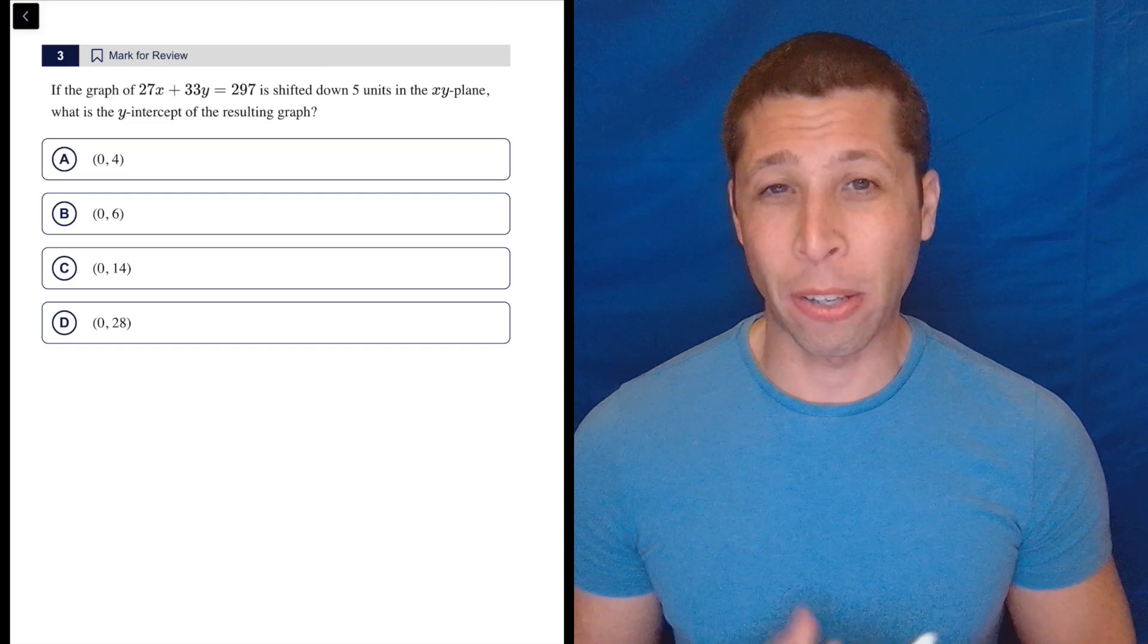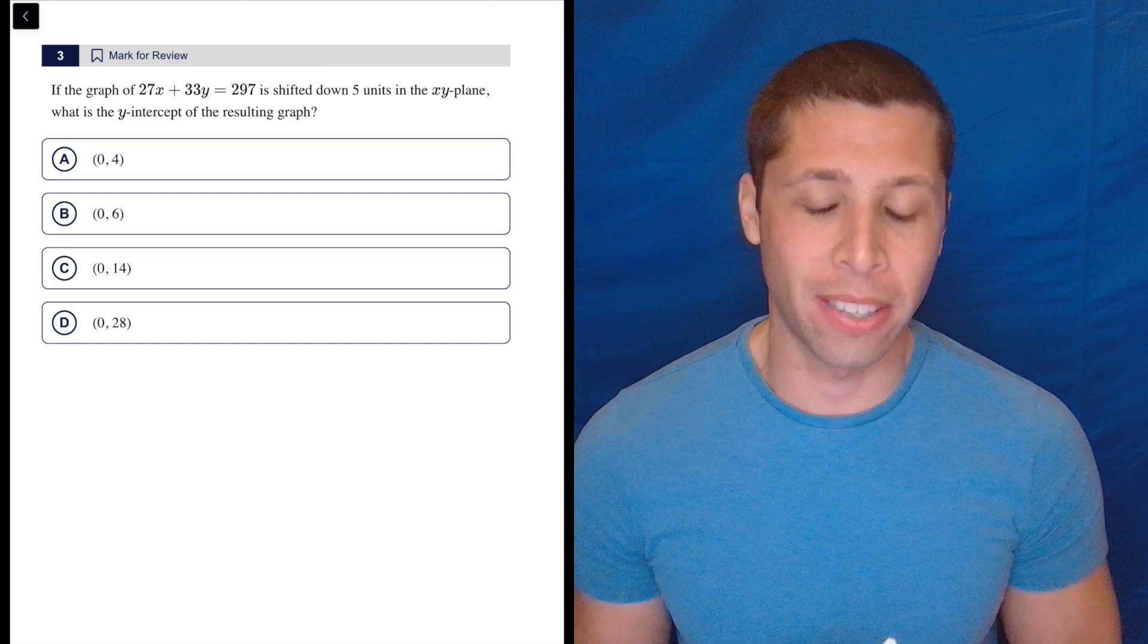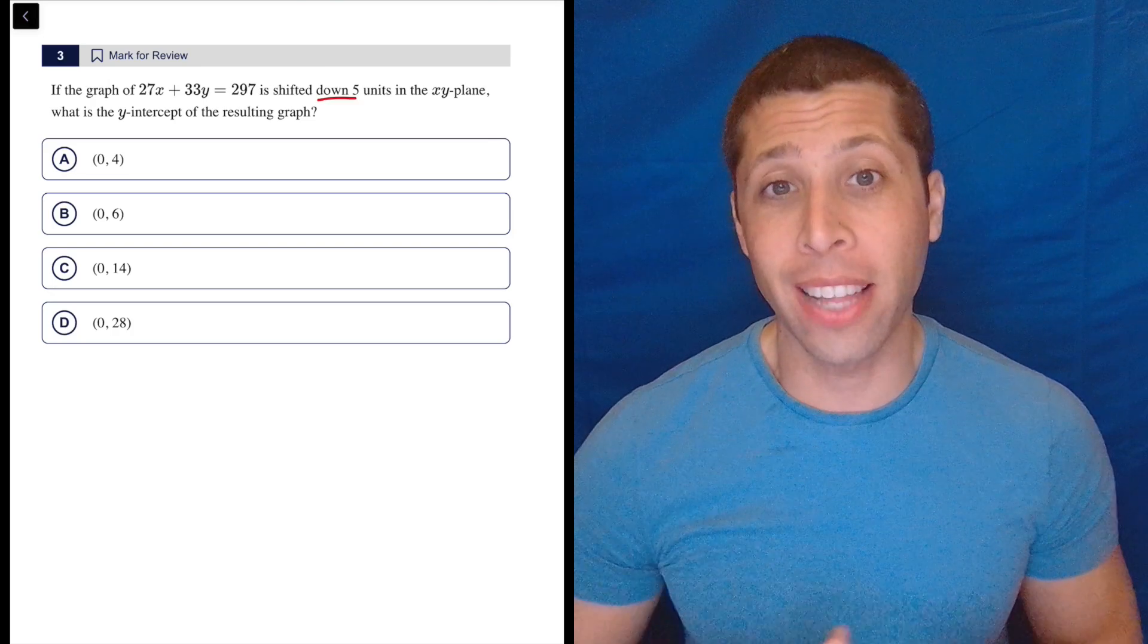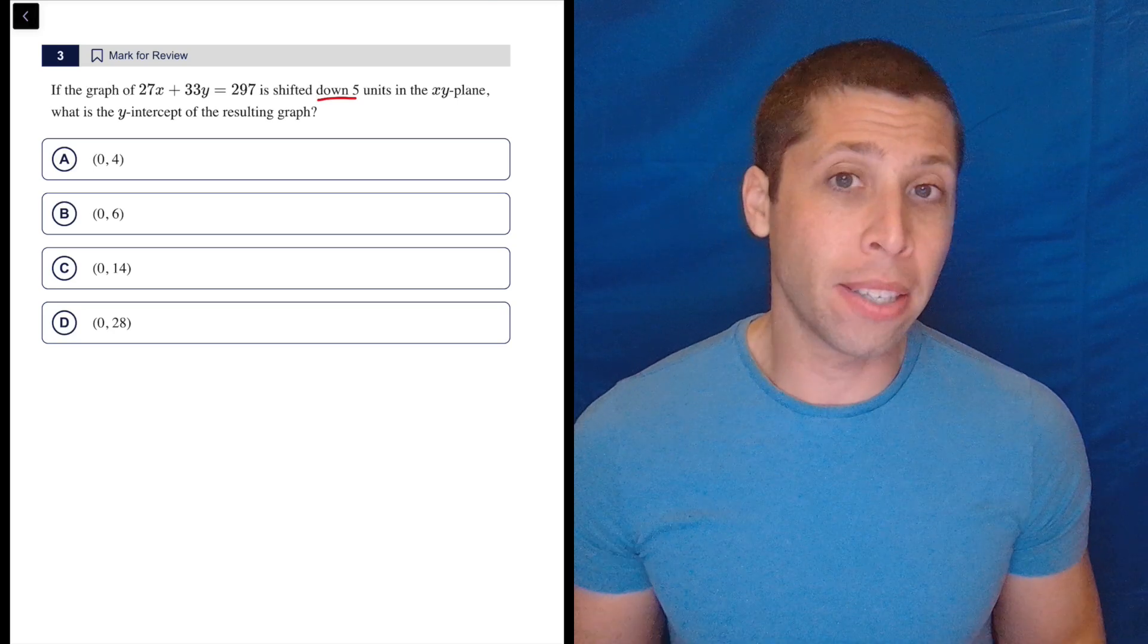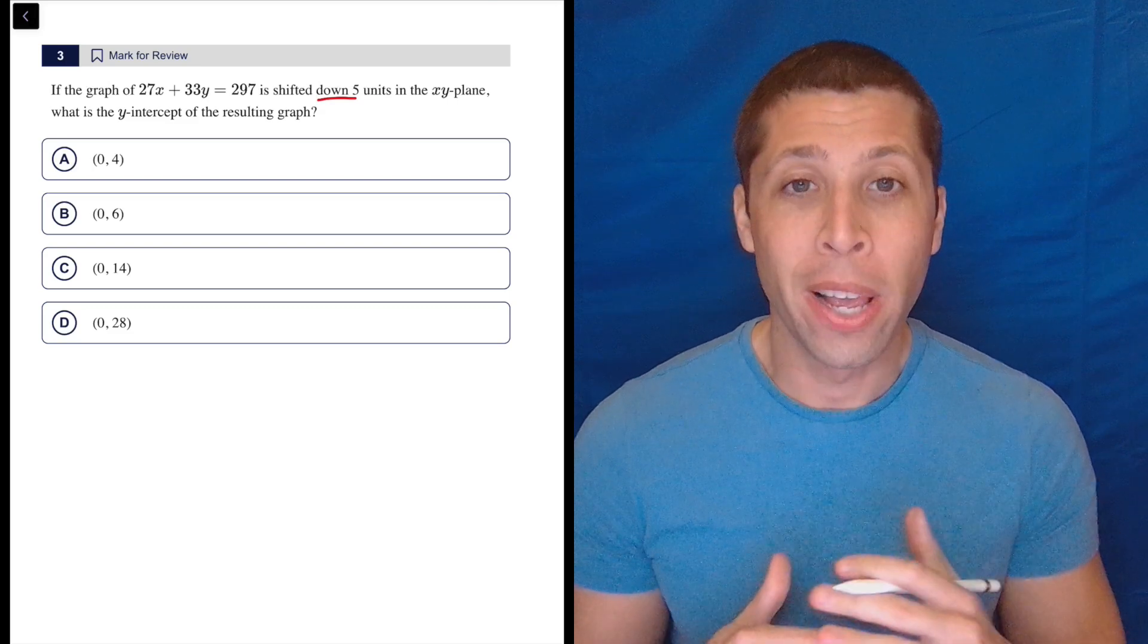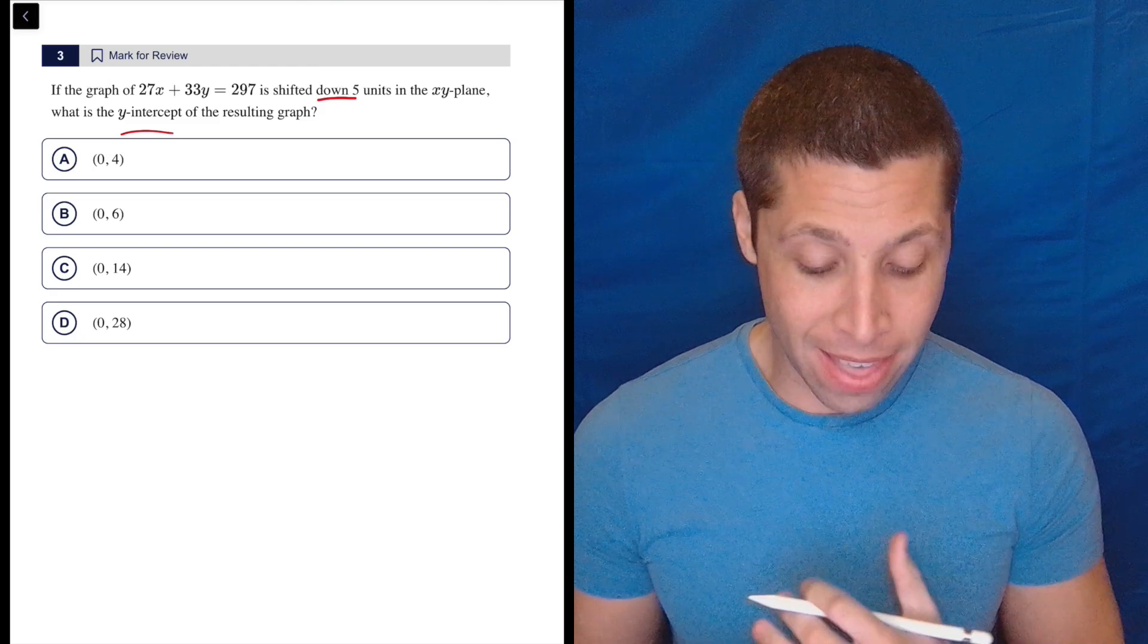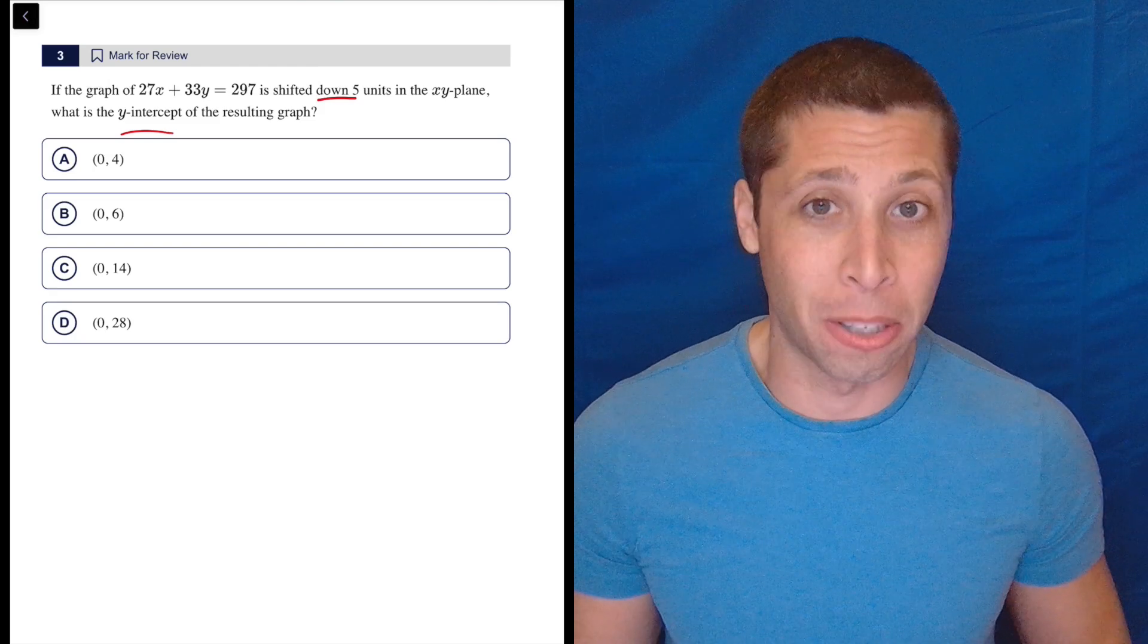The SAT likes to ask about shifting graphs because it's more conceptual than just asking about the graph itself. When we shift up and down, basically along the y-axis, that's the easiest kind of shift we can do. Since we're being asked about the y-intercept, we can find the original y-intercept and then just shift it according to basic addition and subtraction.